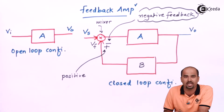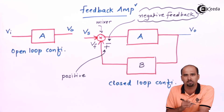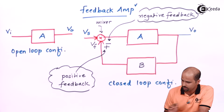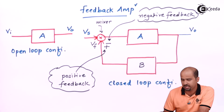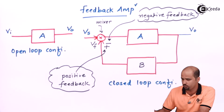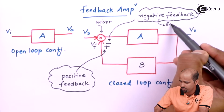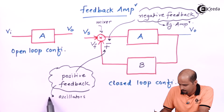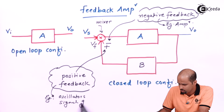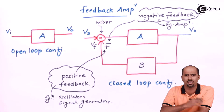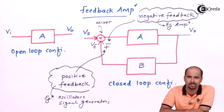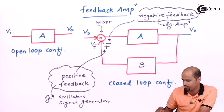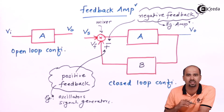There are two categories of feedback: negative feedback and positive feedback. Negative feedback is used in amplifiers, while positive feedback is basically used in oscillators or signal generators. In your laboratories, function generators produce triangular, sawtooth, and many other waveforms — and a function generator is an example of positive feedback. We will discuss oscillators in detail in the next chapter.